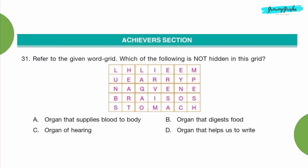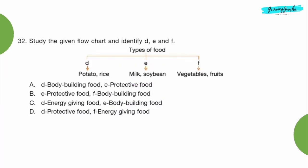Achievers section, question 31: Refer to the given word grid. Which of the following is not hidden in this grid? Option D, organ that helps us to write.